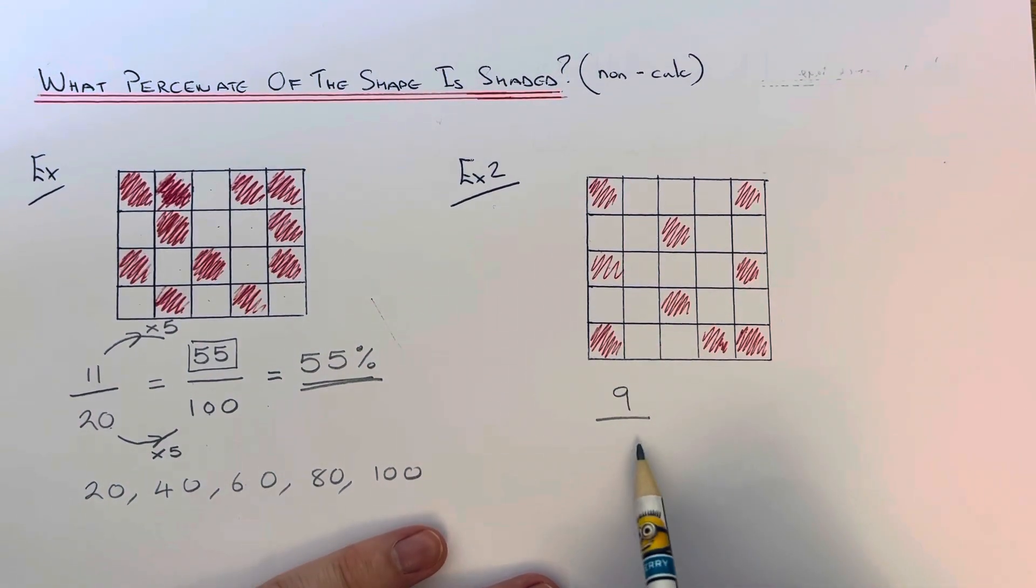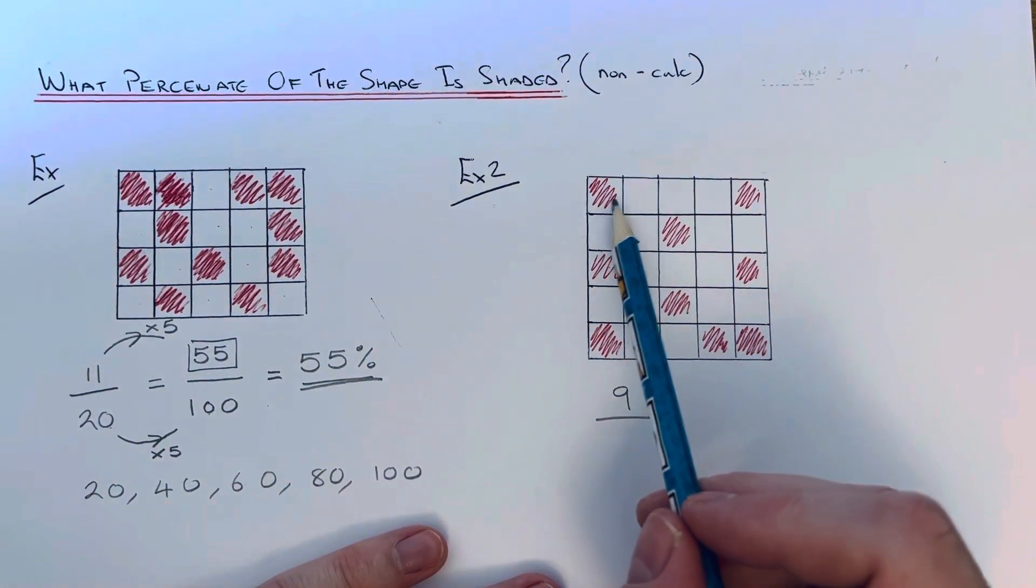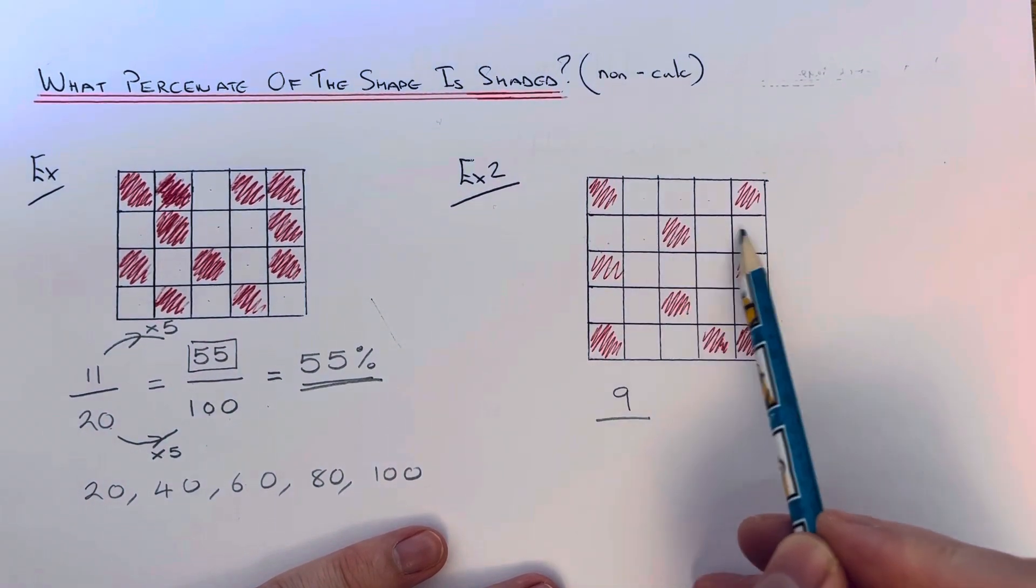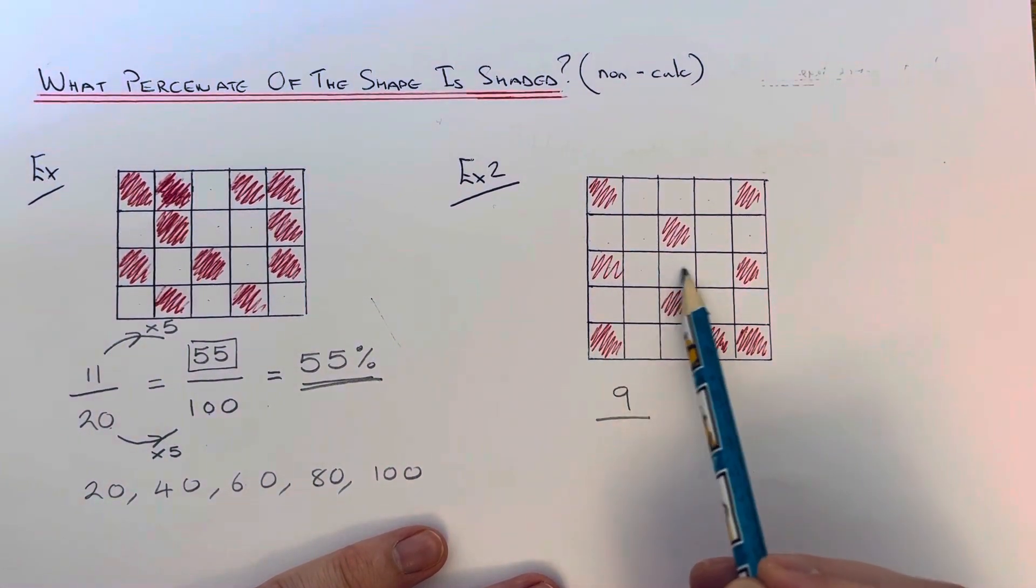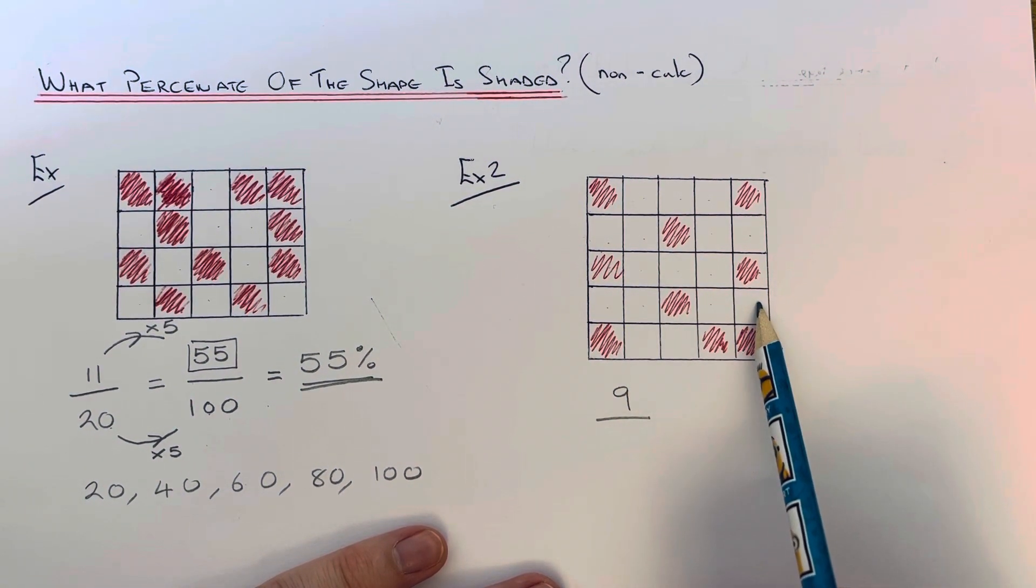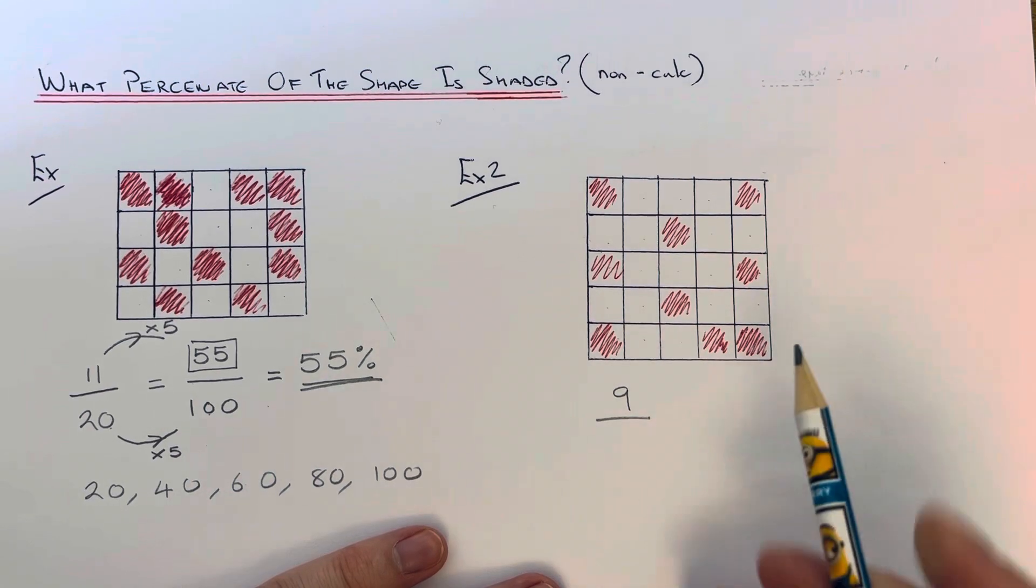And then on the denominator, let's count how many squares we've got altogether. So 1, 2, 3, 4, 5, 6, 7, 8, 9, 10, 11, 12, 13, 14, 15, 16, 17, 18, 19, 20, 21, 22, 23, 24, 25.